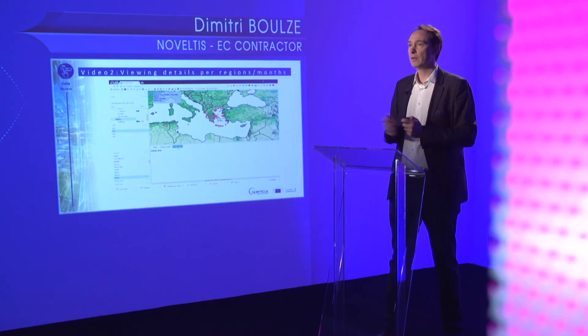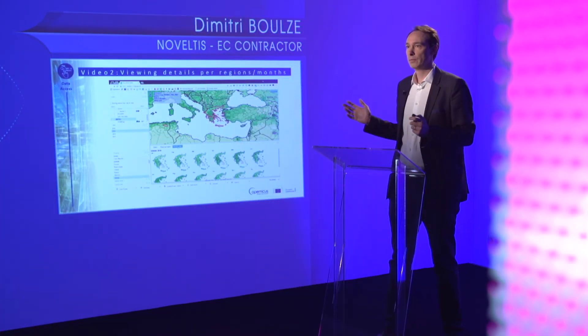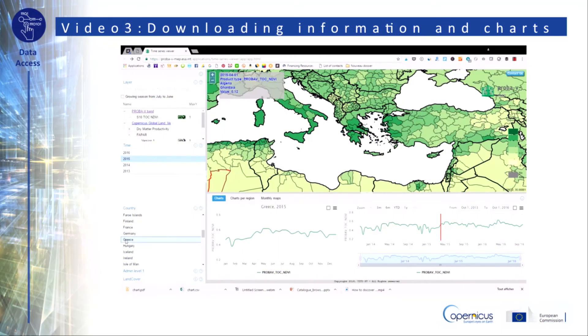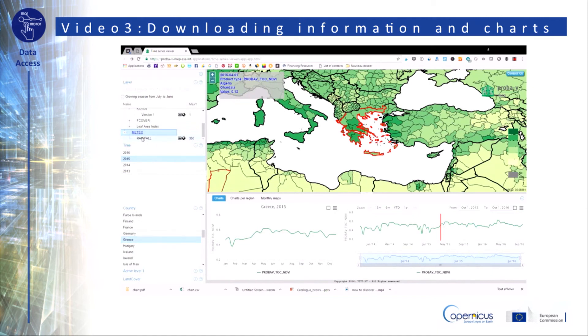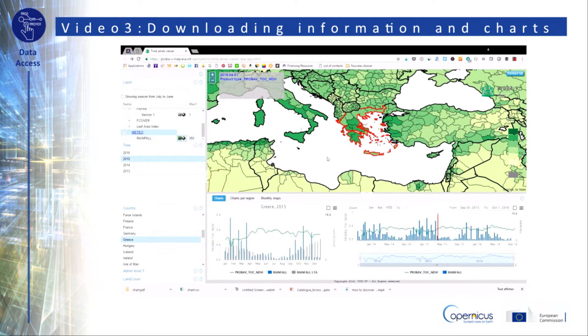In the third video, you will see how to download any of the data we have seen with a simple click. Just click on the icon at the top right of the charts and select the output format you need.